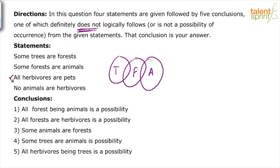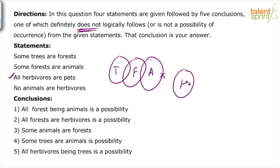Let's keep statement three on hold and move to the next one, because we cannot connect statement three with the first two statements. The fourth statement says no animals are herbivores — this can be connected because we already have animals in the diagram. So animals and herbivores cannot touch each other; these two sets are completely separate.